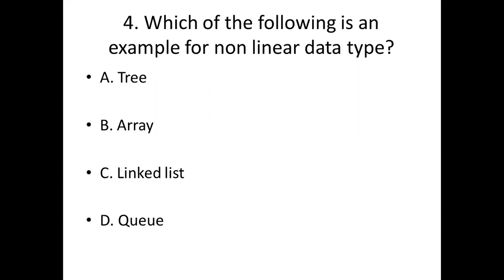Fourth bit. Which of the following is an example for non-linear data type? Option A, tree. Option B, array. Option C, linked list. Option D, queue. Answer is the same. Option A, tree.